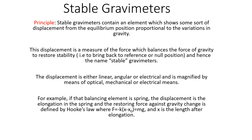All stable gravimeters contain a responsive element which shows some displacement due to small changes in the value of gravity. This displacement from the equilibrium position is also very small because it is proportional to the small variations in gravity. The displacement is also a measure of the restoring force which counteracts or balances the force of gravity, so any deviation from the reference position is counteracted by this restoring force.